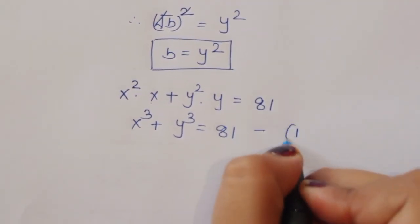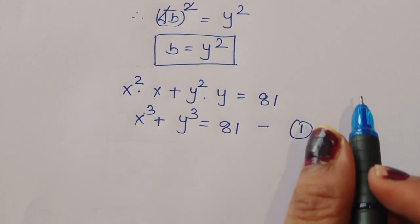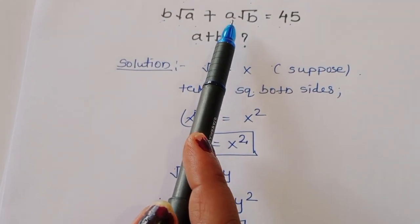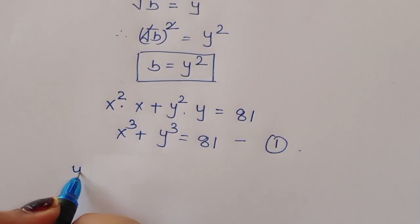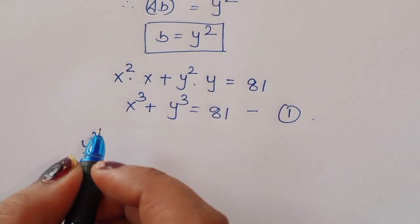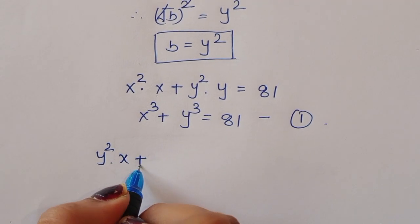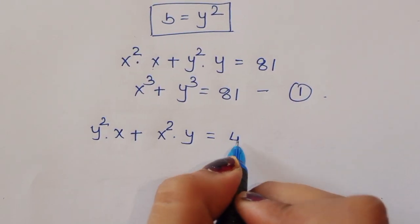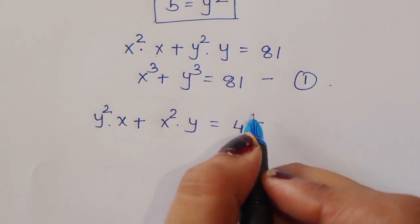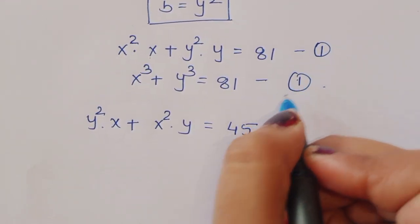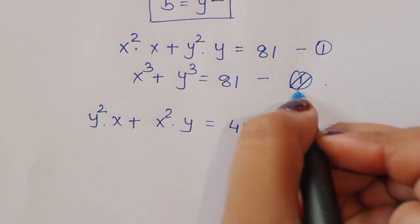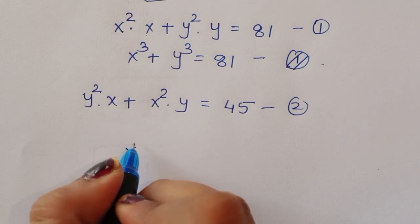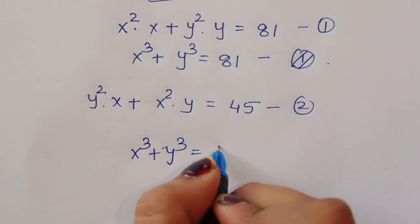Now for equation 2: b√a + a√b becomes y²·x + x²·y = 45. So equation 2 is y²x + x²y = 45. Equation 1 is x³ + y³ = 81, and equation 2 is y²x + x²y = 45.